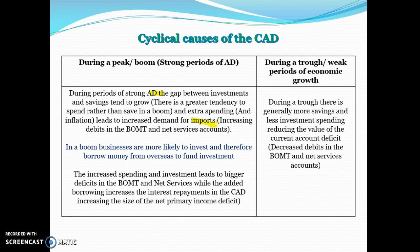People have more money, there's more employment, and there's higher inflation in Australia, so we're more likely to import more because prices in Australia are higher. Businesses are also more likely to spend money investing, so they spend more on imported machinery and infrastructure, all of which flows through the current account. The increased spending because of inflation, higher incomes, and investment spending leads to bigger deficits in the balance of merchandise trade and net services.